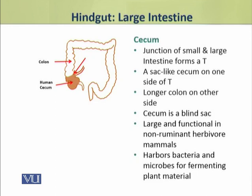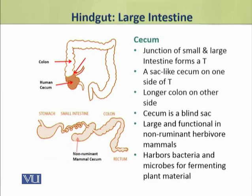The cecum is a blind sac, which is not open on the other side. The cecum is larger and functional in non-ruminant herbivore mammals, where it is relatively large and functional.